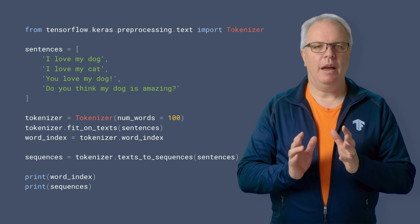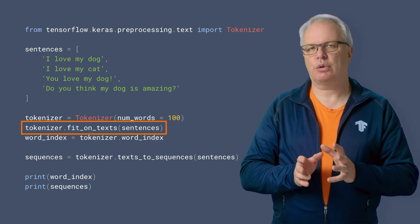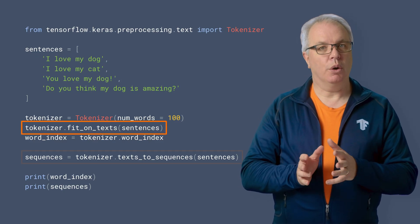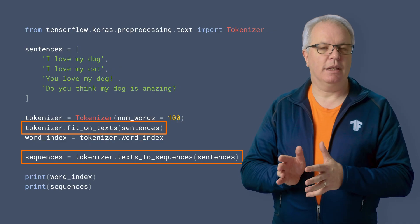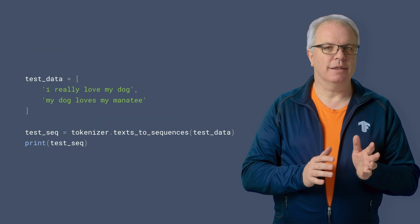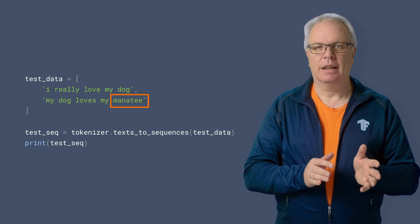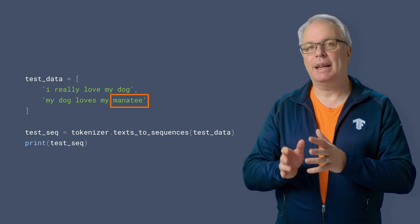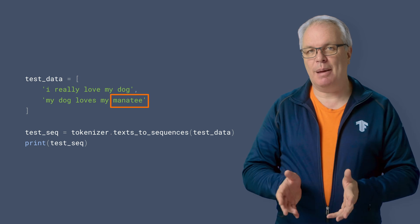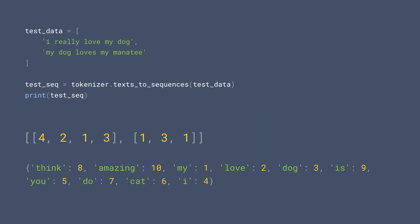Let's now look back at the code. I have a set of sentences that I'll use for training a neural network. The tokenizer gets the word index from these and creates sequences for me. So now if I want to sequence these sentences containing words like manatee that aren't present in the word index because they weren't in my initial set of data, what's going to happen? Well, let's use the tokenizer to sequence them and print out the results. We see this: "I really love my dog" — a five-word sentence — ends up as 4, 2, 1, 3, a four-word sequence.